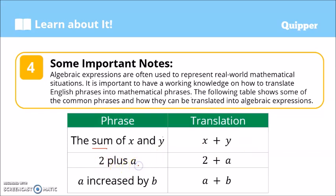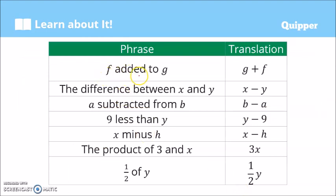'a increased by b' — increased means add, so a is increased by b, giving us a + b. 'f added to g' — here, f is added to g, so g comes first, then we add f, giving us g + f. Note that addition is commutative, but grammatically 'f added to g' means g + f.